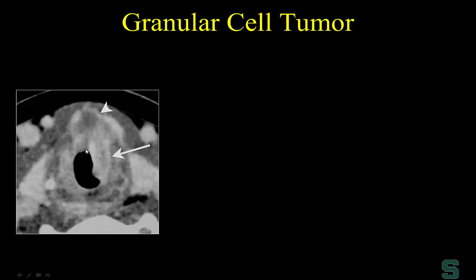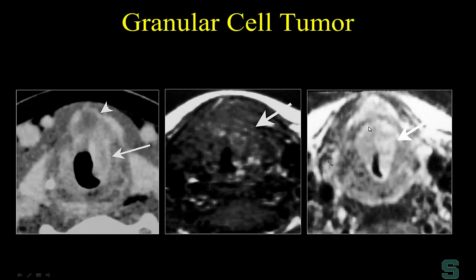By the time granular cell tumors hit imaging, they have a substantial submucosal component. If it were squamous cell carcinoma, the patient would have presented much earlier. Having had multiple shavings with this appearance indicates incomplete resection and unbeknownst deep spread. When I see something like this and it's not squamous cell carcinoma, I think granular cell tumor.